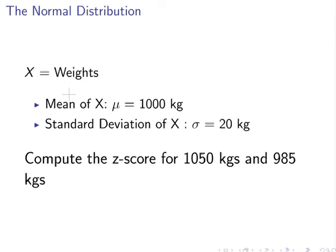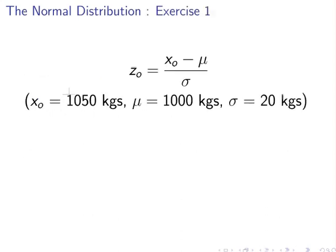Suppose x is weights, and the mean of x is 1000 kilograms, and the standard deviation is 20 kilograms. Compute the Z-score for 1050 kilograms, and also 985 kilograms. So, we've got two little examples there.